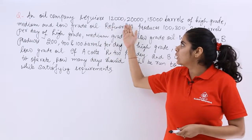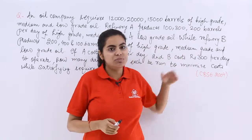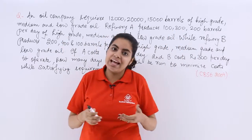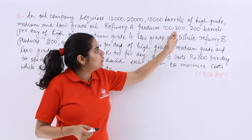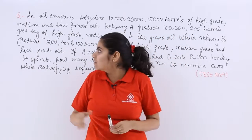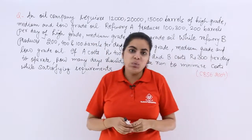The question is: an oil company requires 12,000, 20,000 and 15,000 barrels of high grade, medium grade and low grade oil. Refinery A produces 100, 300, 200 barrels per day of high grade, medium grade and low grade.